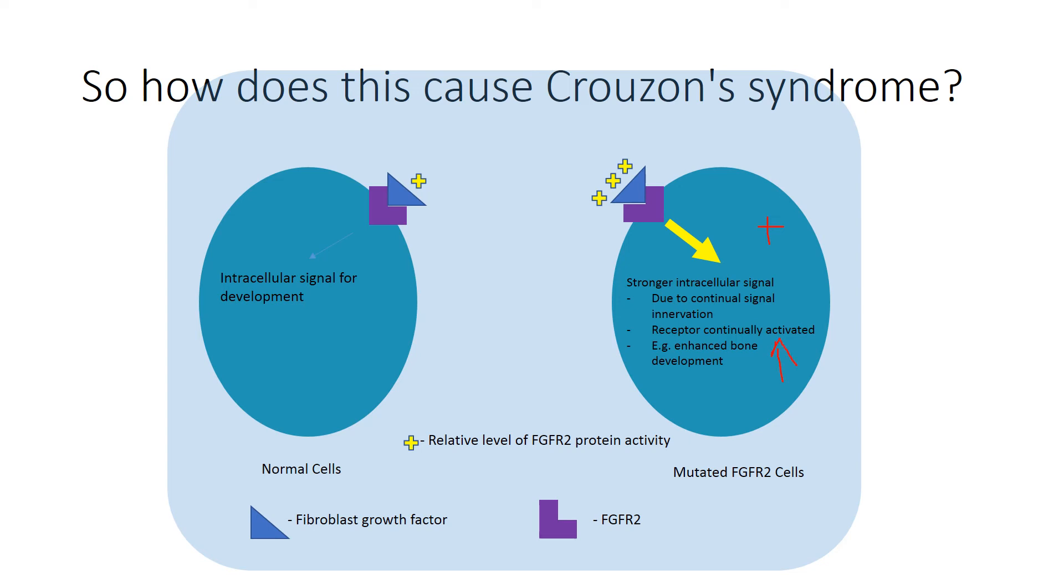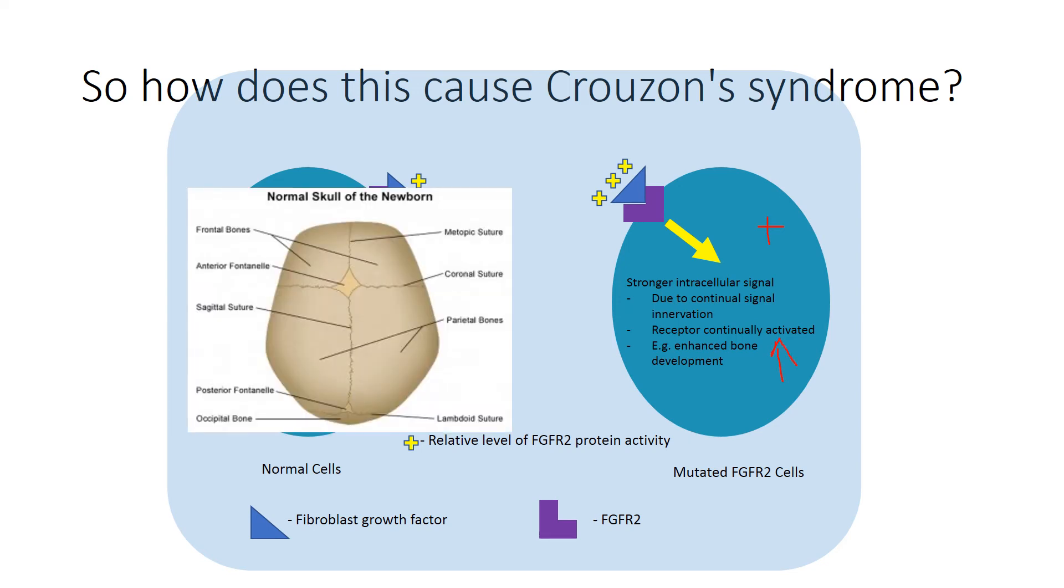Because of increased bone growth, there is premature fusion of certain skull bones, known as craniosynostosis. So as you can see here, there are certain sutures, or connections here, that generally fuse during early child growth.